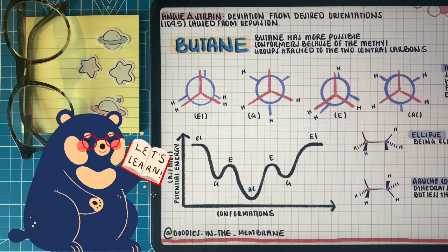And then finally, we have the anti-conformation, which is that the two methyl groups are staggered and they're the furthest away that they can be from one another. Then we'll start cycling back to another E1 state.